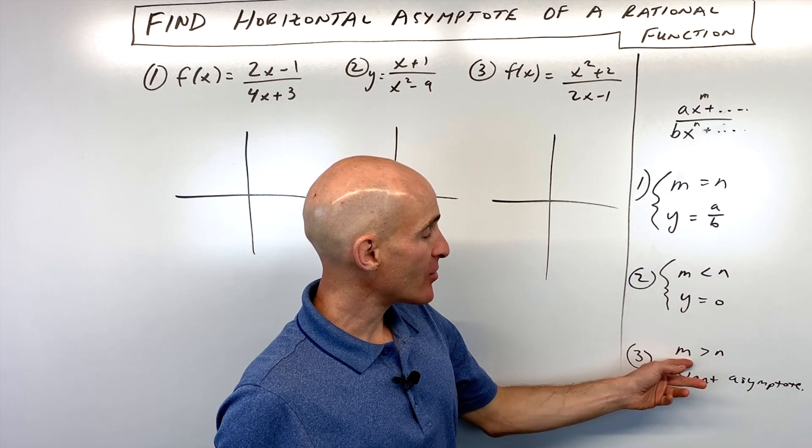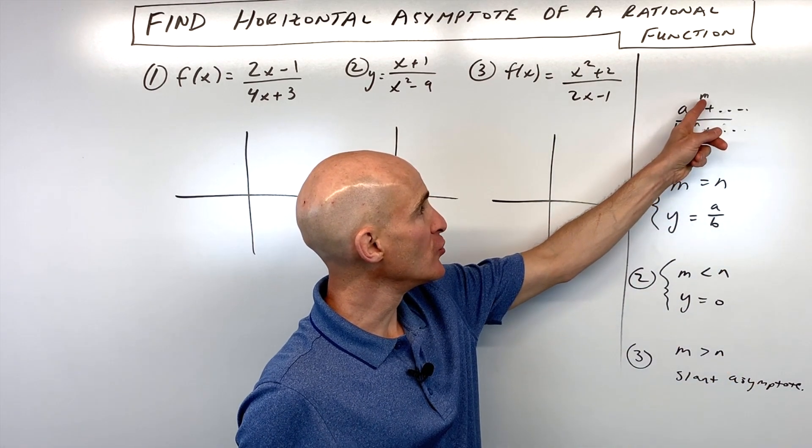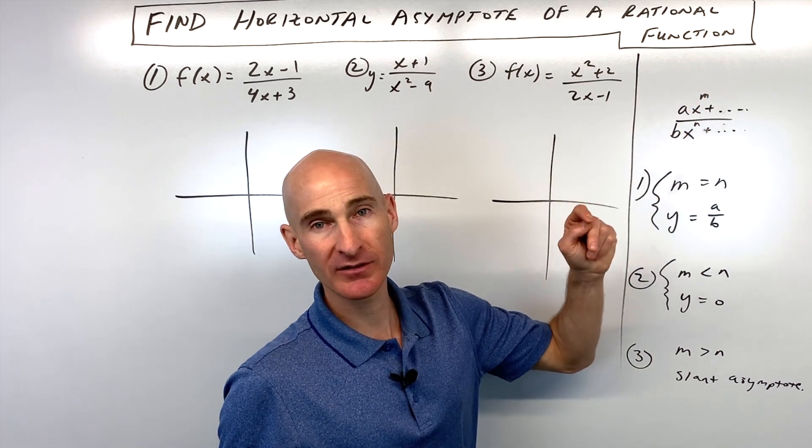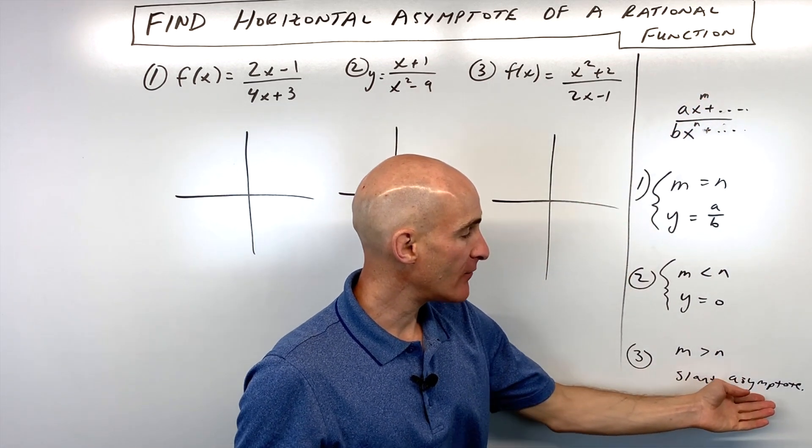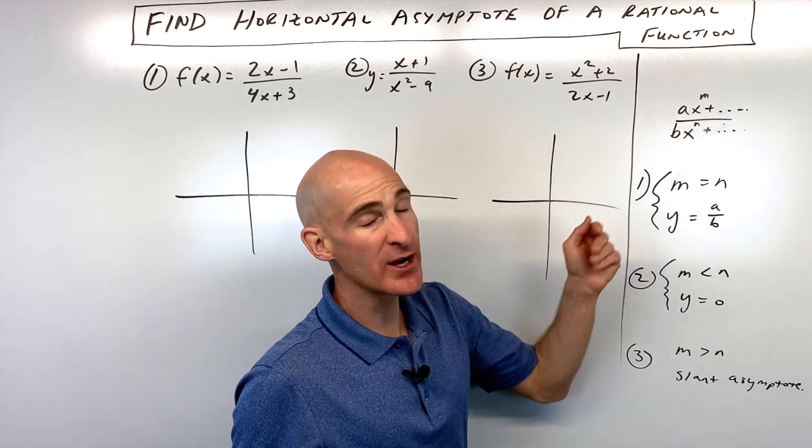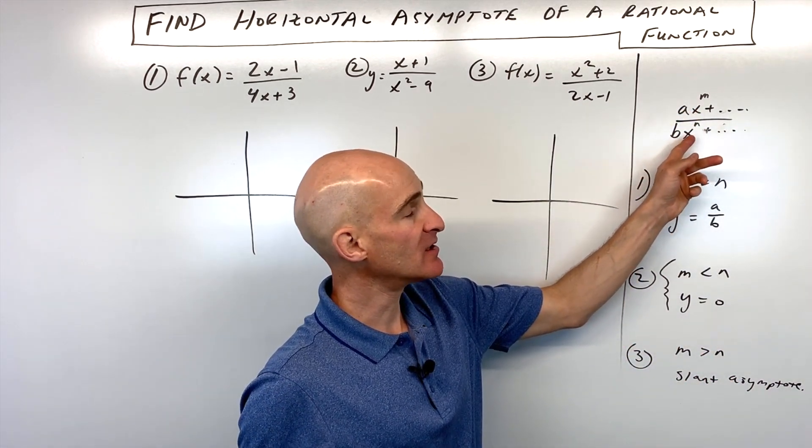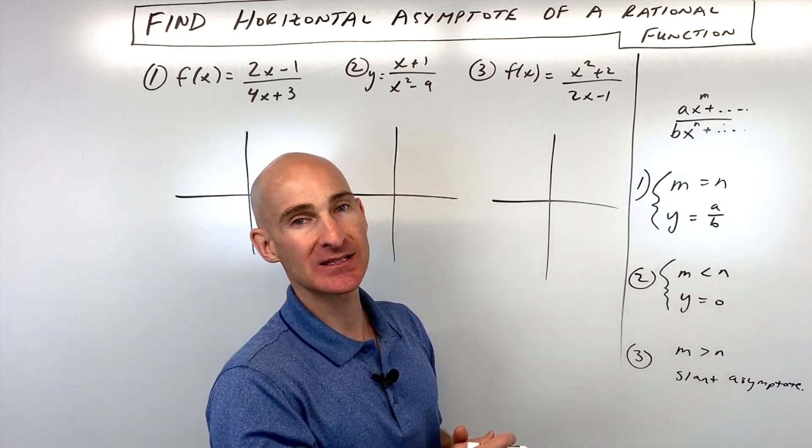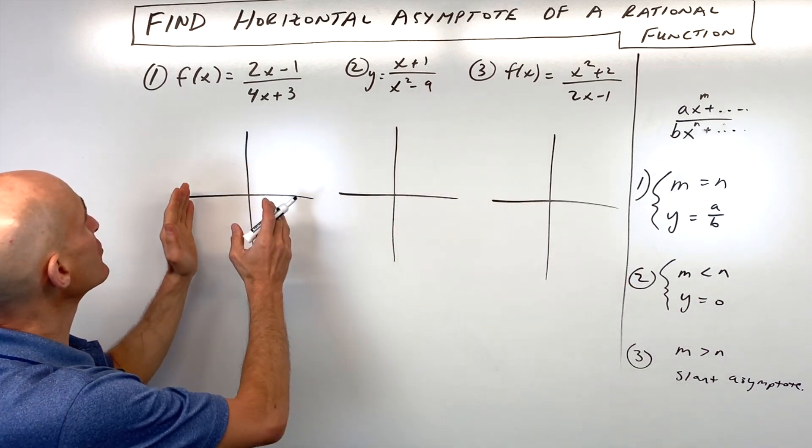And the third scenario is when m is greater than n, meaning the numerator's exponent is higher than the denominator's exponent, then we have no horizontal asymptote, or if it's just one degree larger than the denominator, then it's a slant asymptote. Okay, so I'll show you three examples.